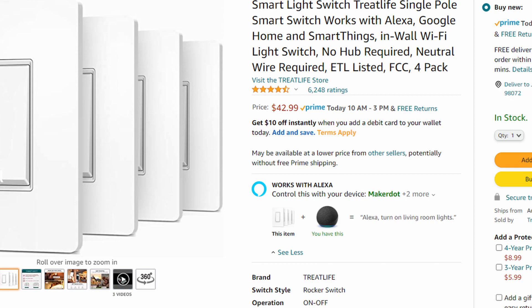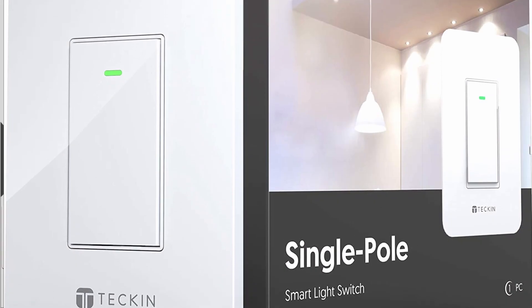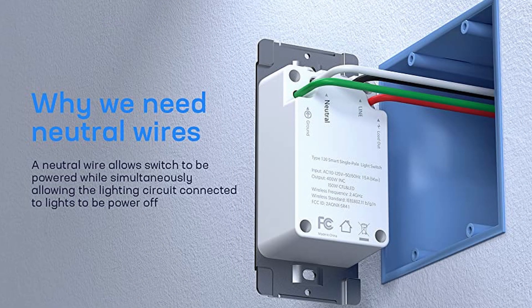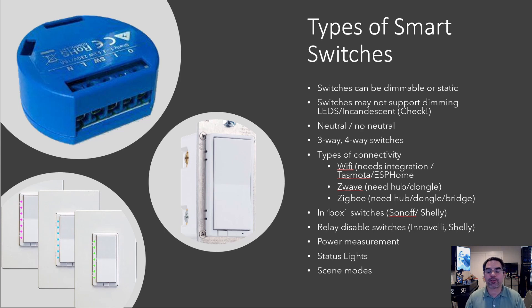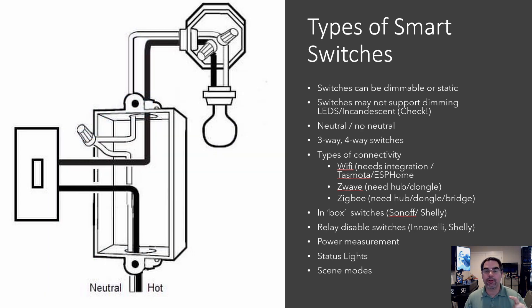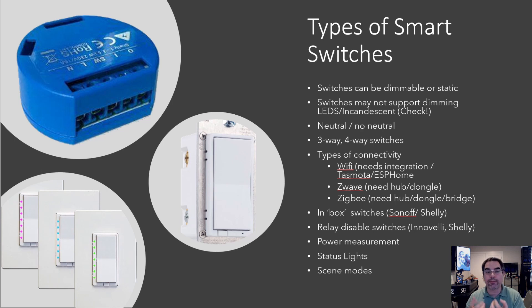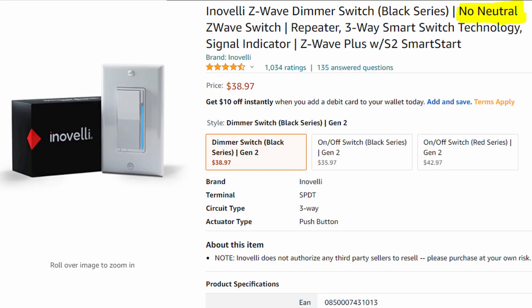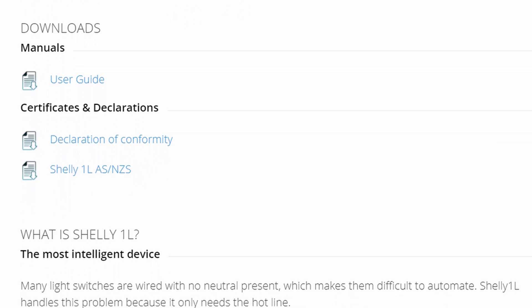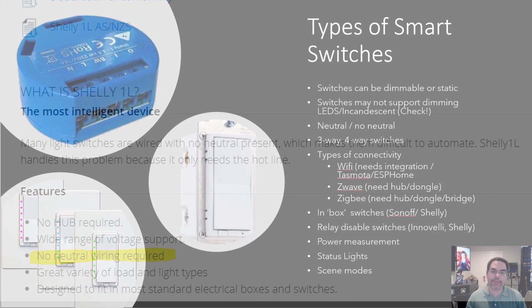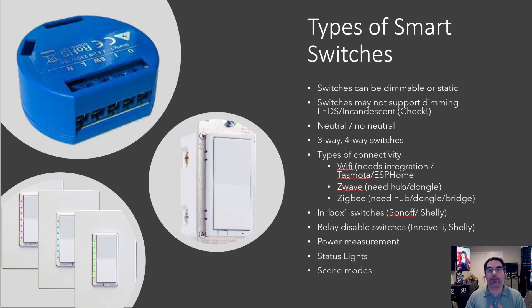Neutral versus no neutral — when you buy smart switches, it'll say neutral required. I'm going to assume you're familiar with electrical if you're hooking up the switches yourself. The white wire is the neutral wire. What you want to do is take your switch out and look for it in the back of the box. Smart switches require a neutral because they need power to listen. Dumb switches don't — they're just in the middle of line and load switching mechanically. There are very few smart switches that work without a neutral, but Inovelli and Shelly both make one that will.